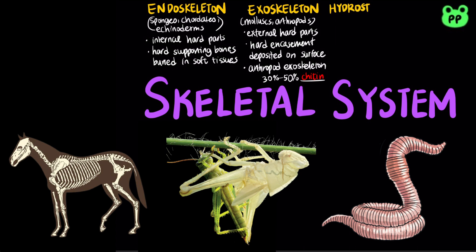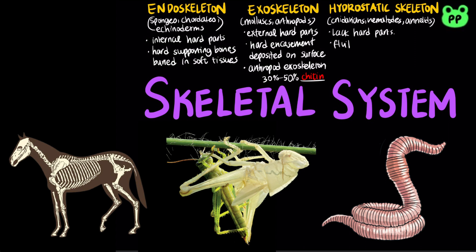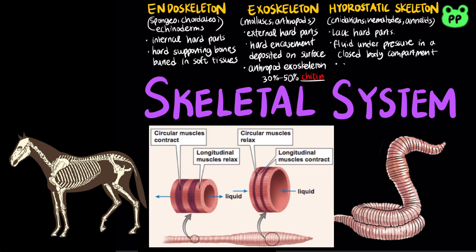The third type of skeleton is known as hydroskeleton, which is found in cnidarians, flatworms, nematodes, and annelids. Hydroskeleton lacks a hard part and consists of fluid held under pressure in a closed body compartment. Annelids use their hydrostatic skeleton for peristalsis, a type of movement on land produced by rhythmic waves of muscle contractions.